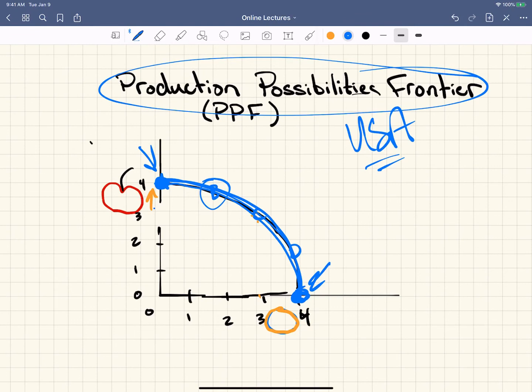Production efficiency means that we're producing as much as we possibly can produce, but the mix is undetermined. Allocative efficiency means we're producing the mix of goods and services that a country like the USA would want. So if we're producing here inside the curve, then we're not at production efficiency, because we can move out to the line. But as long as we're on the line, we're at production efficiency, but we may or may not be at allocative efficiency. There's no way of knowing without knowing what mix of goods and services that particular country would want.